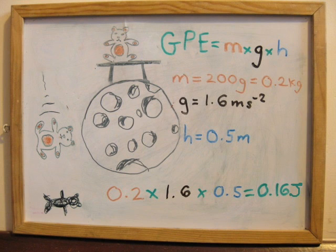In order to find the bear's gravitational potential energy, we must multiply together the three factors which we previously discussed. The mass of the bear is 200 grams. However, we must convert this into kilograms in order to find the correct answer. So we divide by 1000, giving us 0.2 kilograms. Gravity is given to us as 1.6 meters per second squared, and the height is 0.5 meters. Multiplying each together gives us 0.16 joules.